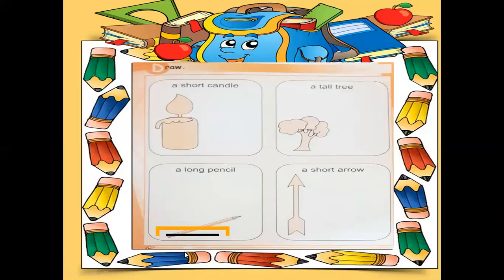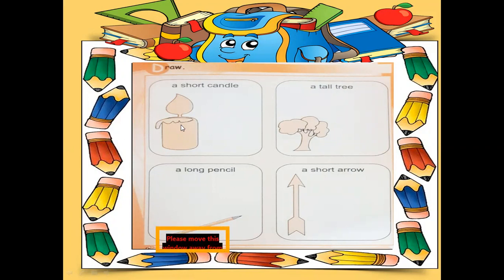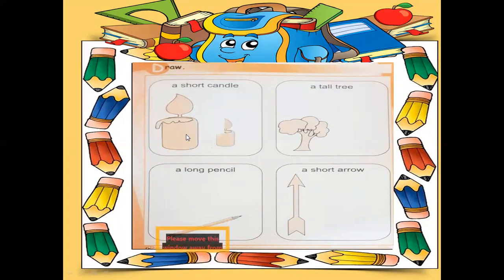In the first exercise, they are asking about the candle - one candle is already shown and you will draw another. You will draw a short candle that will be shorter than this one. When we are talking about tall and short, we are actually talking about the height of the object. So draw a short candle. Look here - this candle is shorter than this one. Now we are done with our first exercise.